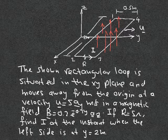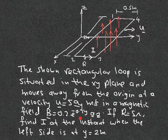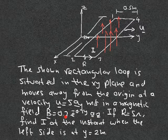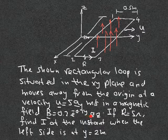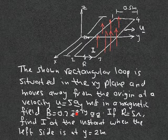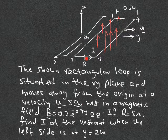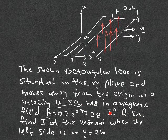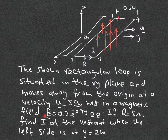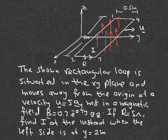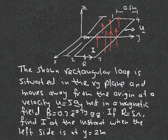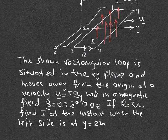The loop is moving in a magnetic field that does not change with time but changes with space. The field is 0.2 e to the minus 0.1y, in the az direction — so this magnetic field gets weaker as you move in the y direction. There is a tiny cut with a resistance of 5 ohms, and we need to find the current i.